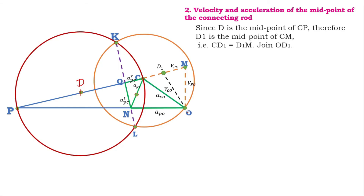The absolute velocity of midpoint D is given by the distance O to D1 (measured from the reference point O). By measurement, O to D1 is 140 mm, which converts to 0.14 meter.